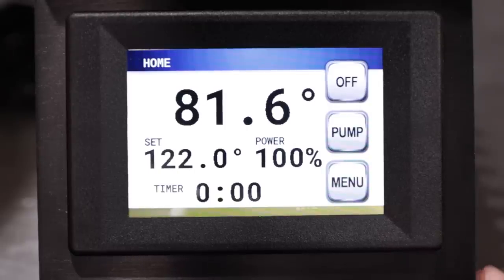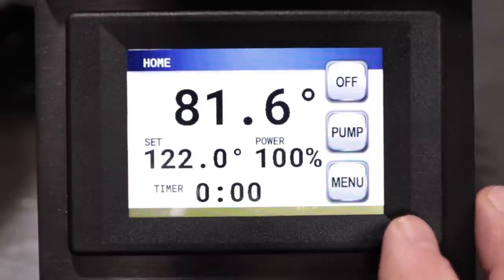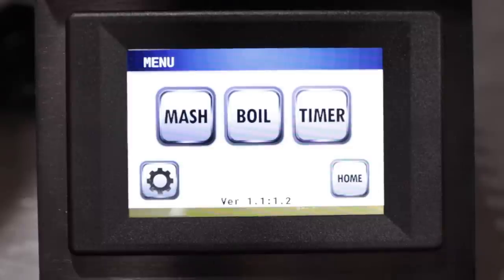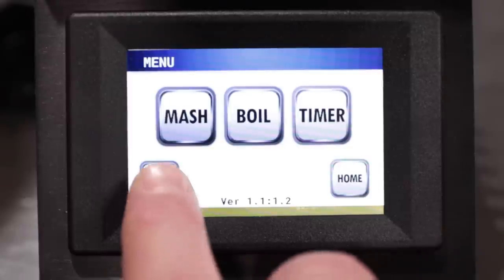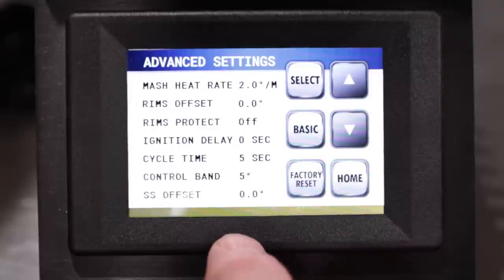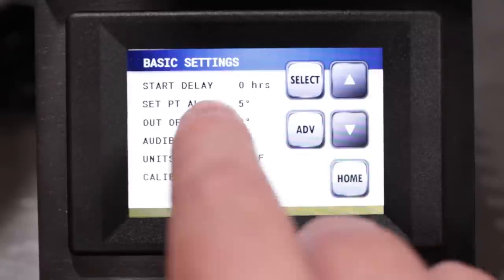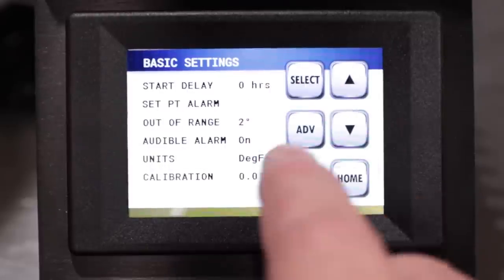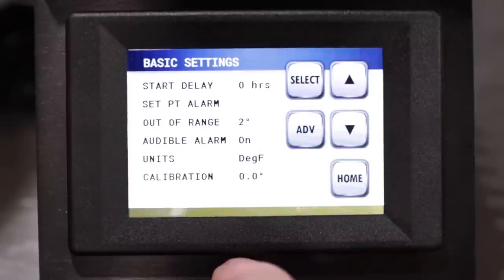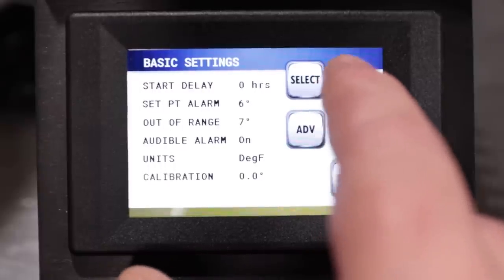Alright, so let's run through some of the recommended setup options for the RIMS system and HERMS system. According to Blichmann's information, they are saying that in the advanced menu for a RIMS setup, this is either with a RIMS tube or their actual RIMS rocket, they want to make a couple of adjustments. One of them is in the basic area, the set point alarm. They're saying to set that to six degrees, and then the out of range set that to eight degrees Fahrenheit.